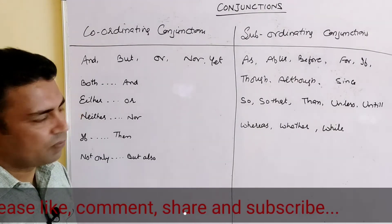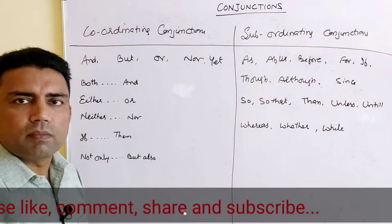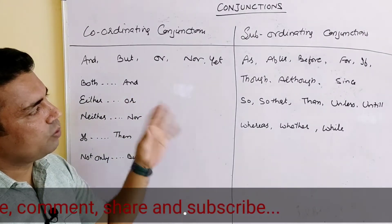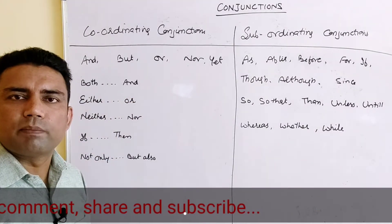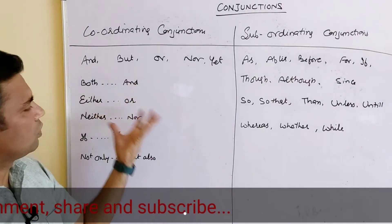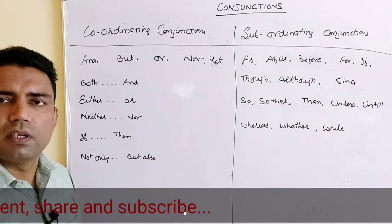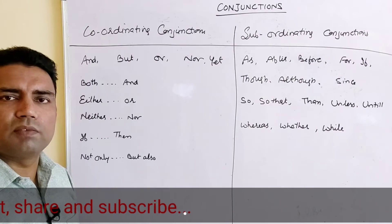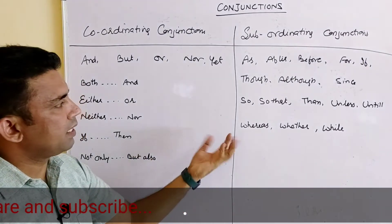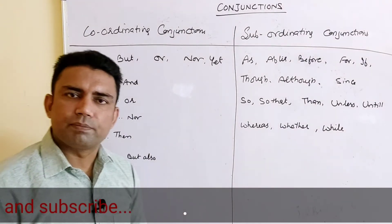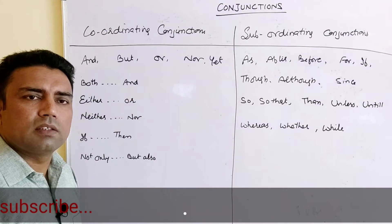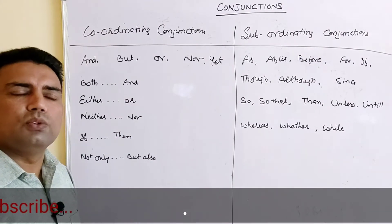Instead of giving you sentences for each one, I'm going to tell you the meanings very quickly because sometimes it feels quite boring, and most of these words you are already aware of. So I'm just going to tell you the meaning as well as give examples orally, not by writing. 'And' is the connector which is used basically to connect two facts of the same type.